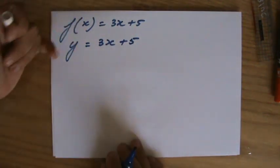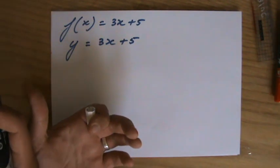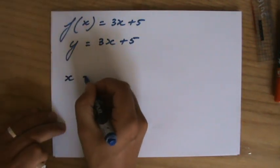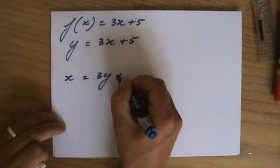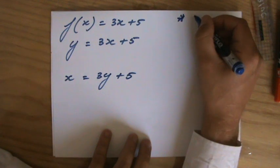Rather than f(x) I'm going to put there a y. Now to find the inverse, I'm going to swap x and y, so it's going to become x equals 3y plus 5. So first of all I have to swap.